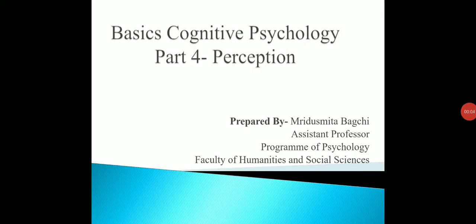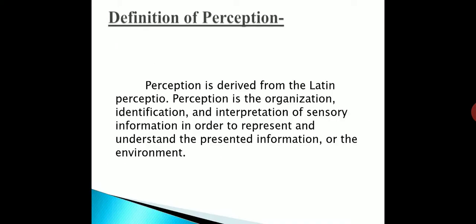Hello everyone, today we are going to discuss the topic of perception. Definition of perception: Perception is derived from the Latin word perceptio. Perception is the organization, identification, and interpretation of sensory information in order to represent and understand the presented information or the environment.